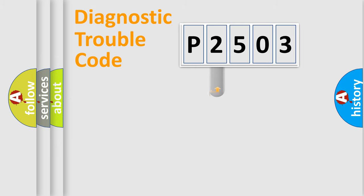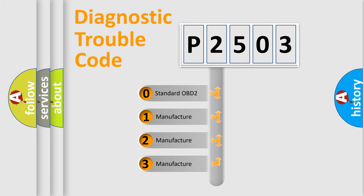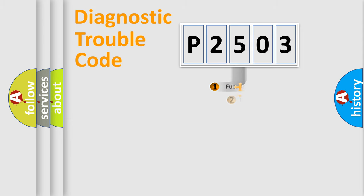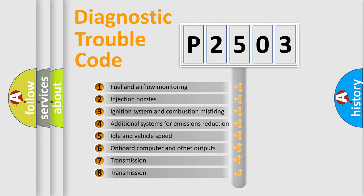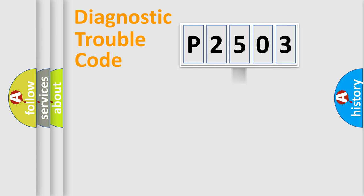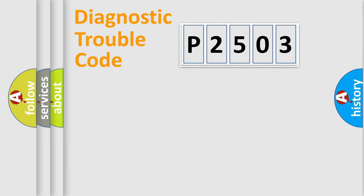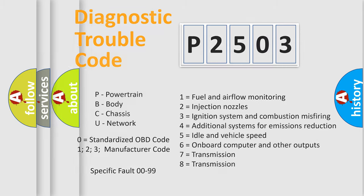This distribution is defined in the first character of the code. If the second character is expressed as zero, it is a standardized error. In the case of numbers 1, 2, or 3, it is a more specific expression of a car-specific error. The third character specifies a subset of errors. The distribution shown is valid only for the standardized DTC code. Only the last two characters define the specific fault of the group. This division is valid only if the second character code is expressed by the number zero.